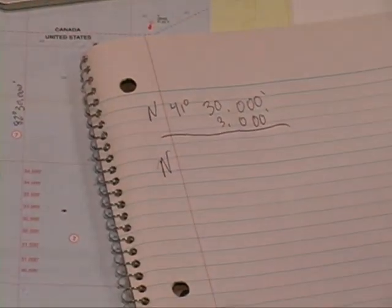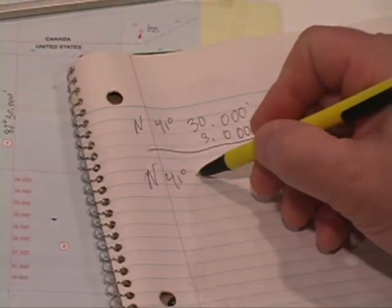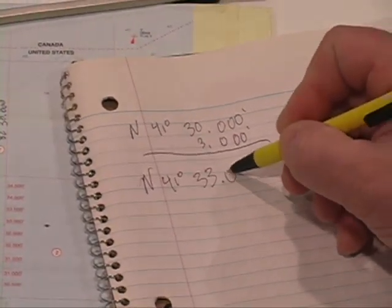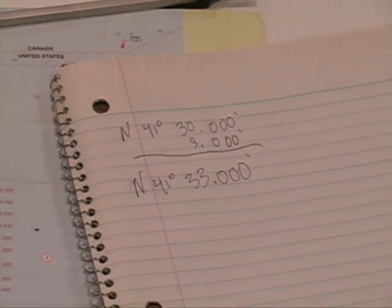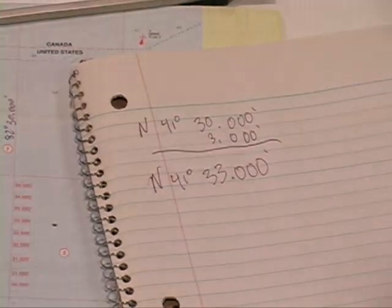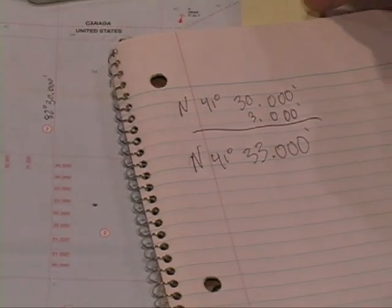So, the latitude of my unknown waypoint is 41 degrees 33.000 minutes. So, I've just determined the latitude of an unknown point on my map. Fairly simple process.